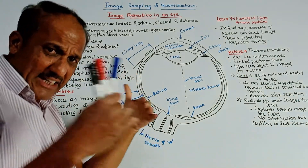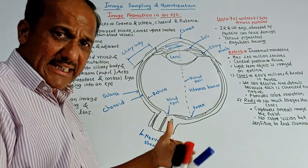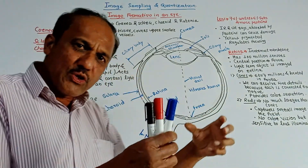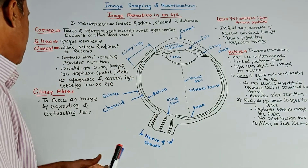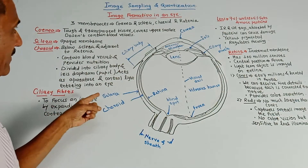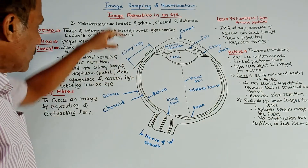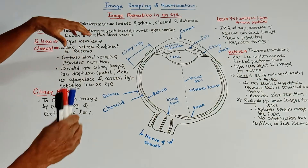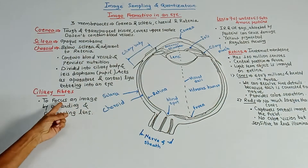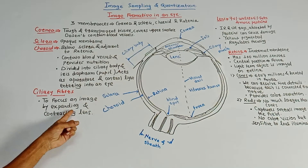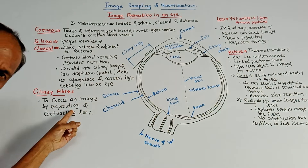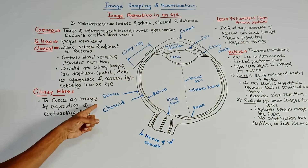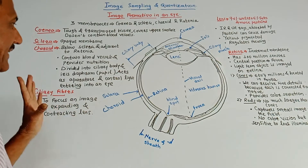The iris diaphragm acts as an aperture and controls the light entering our eyes. Ciliary fibers are used to focus an image by performing expansion or contraction of the lens.